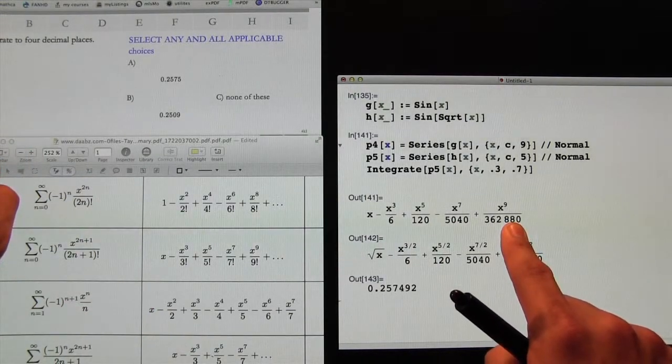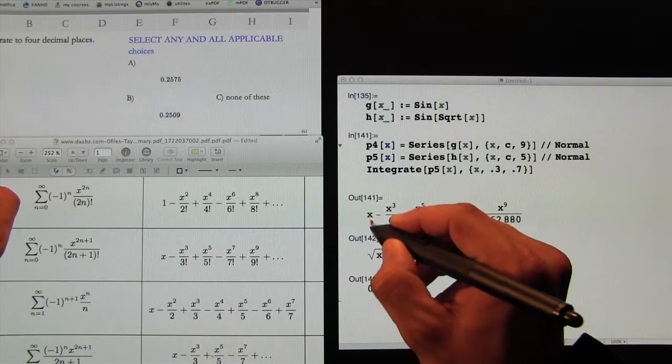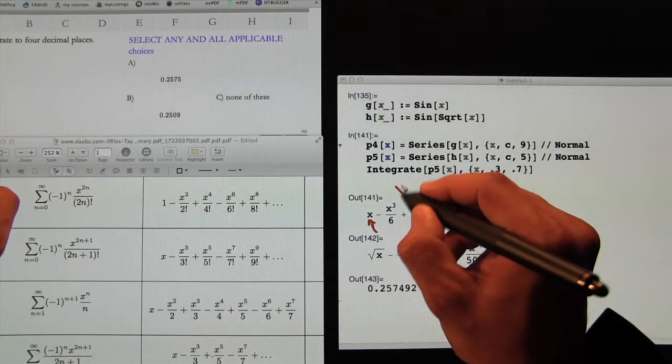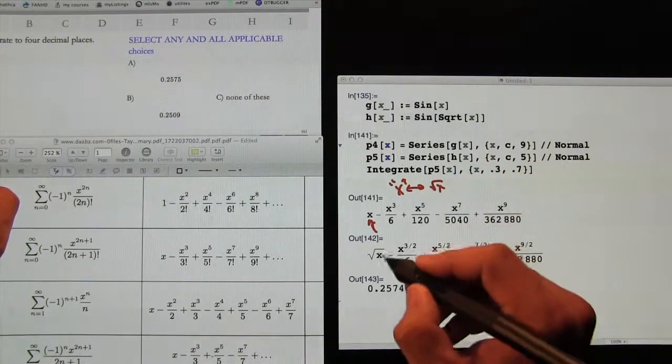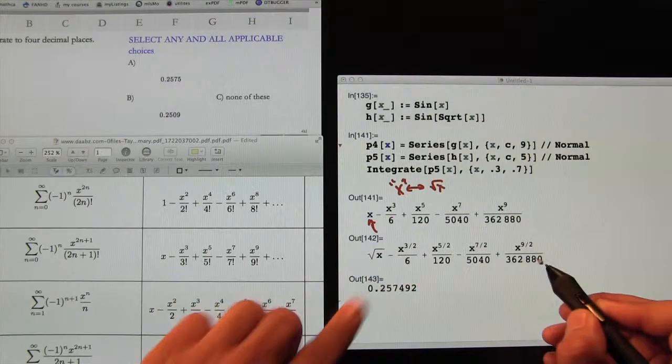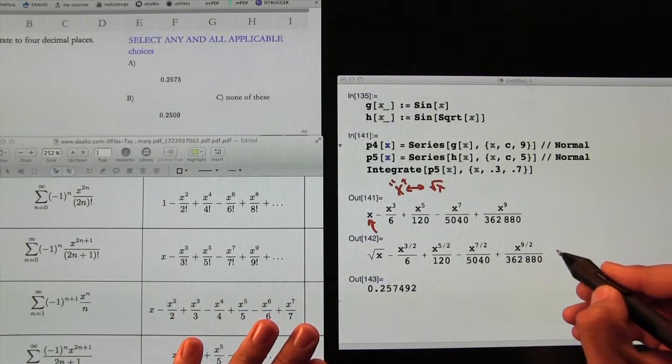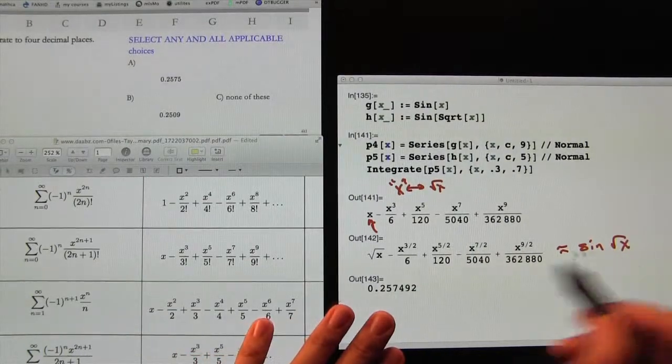Now to get the sine of square root of x, you just go in here and substitute x. Instead of x, you exchange that for the square root of x. And that would give you an expansion like this one: square root of x, x to the 3 halves, and so on and so forth. And this would be approximately equal to sine of the square root of x.